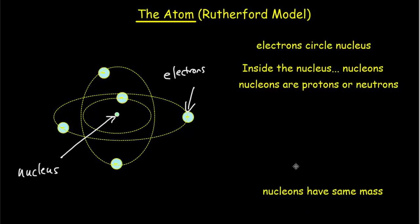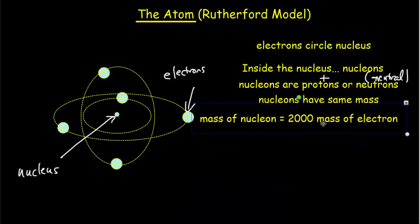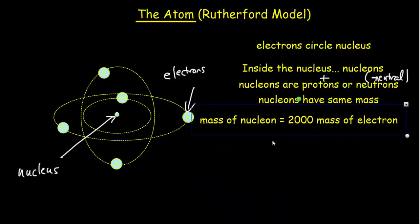Nucleons and protons are similar particles because they have basically identical mass. The difference is in their charge — protons have a positive charge, whereas neutrons are neutral and have no charge. If we compare the mass of a nucleon to an electron, nucleons are much, much more massive, about 2,000 times more massive. So all the mass is concentrated in the nucleus.